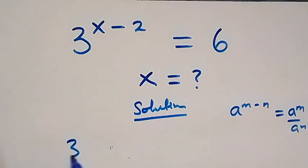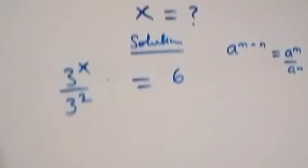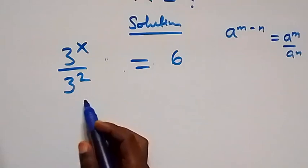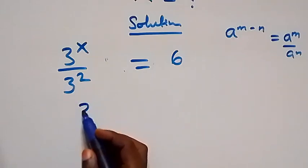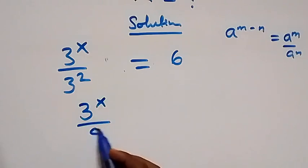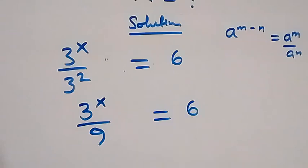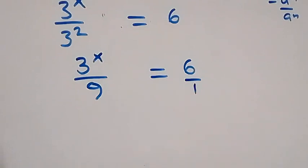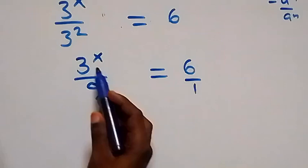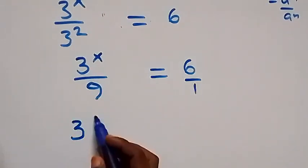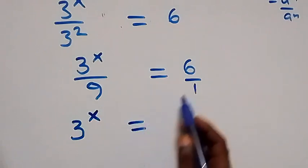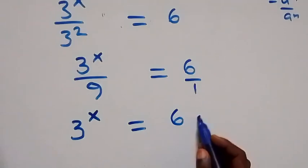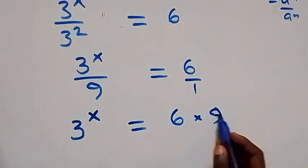What we have can be written as 3 raised to power x over 3 squared equals 6. Now 3 squared is 3 times 3, which is 9. So we have 3 raised to power x over 9 equals 6 over 1. When we cross multiply, 3 raised to power x equals 6 times 9.